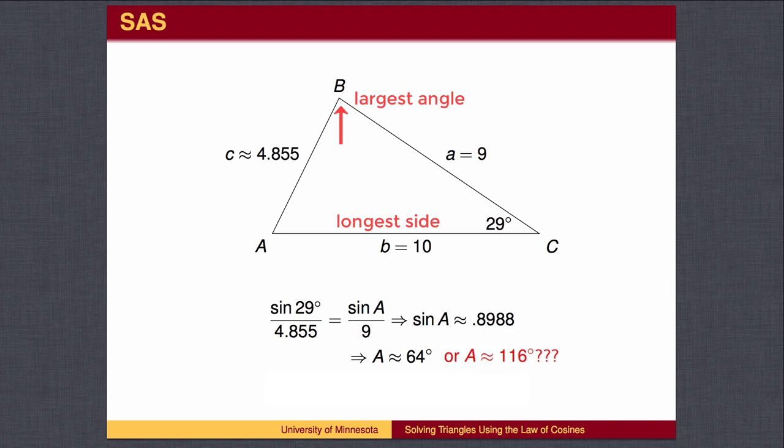Side B is longer than side A. If angle A is bigger than 90 degrees, and angle B is the biggest angle, then angle B is also bigger than 90 degrees, and together angle A and angle B would add to more than 180 degrees.